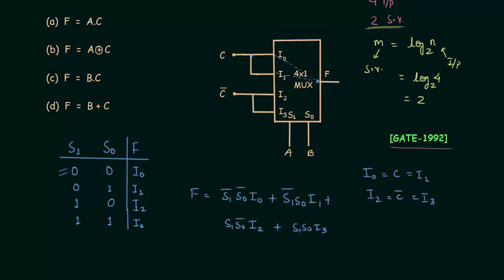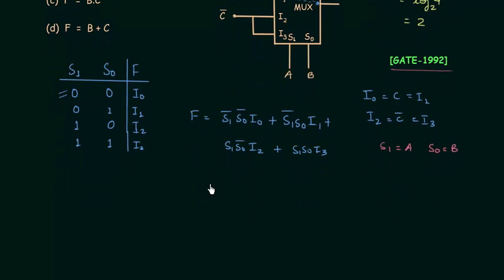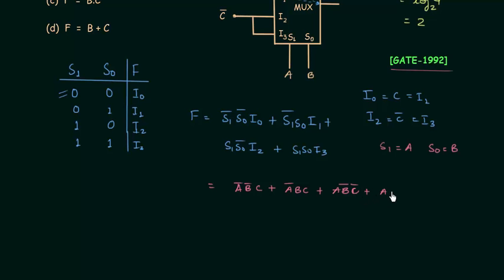From the problem, S1 equals a and S0 equals b. Substituting these values: the expression becomes a'b'c + a'bc + ab'c' + abc. So the first product term is a complement · b complement · c, then a complement · b · c, then a · b complement · c complement, then a · b · c.